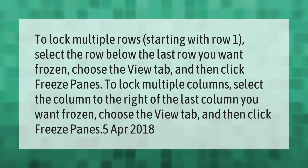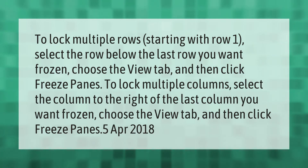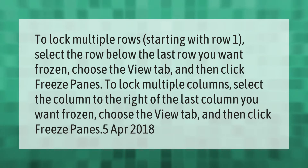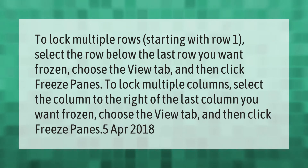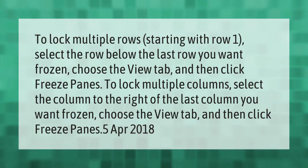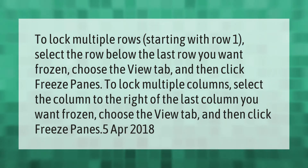To lock multiple rows starting with row 1, select the row below the last row you want frozen, then choose the View tab and click Freeze Panes. To lock multiple columns, select the column to the right of the last column you want frozen, then choose the View tab and click Freeze Panes.